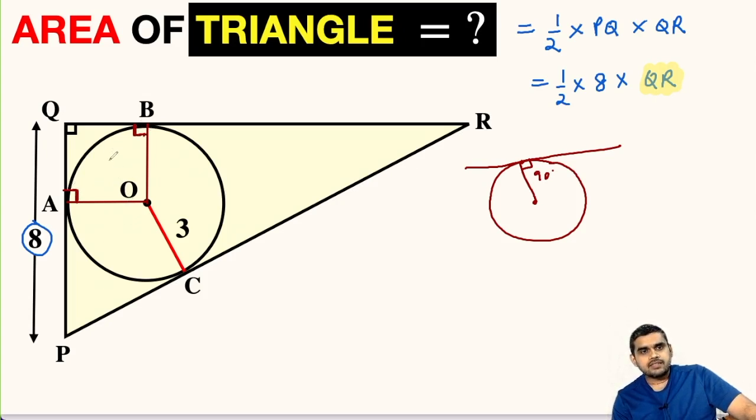Now after this, we can see that quadrilateral OAQB becomes a square. So here the radius is given as 3 units. So this will also be 3 units, this will also be 3 units, QA will be 3 units and QB will be 3 units.